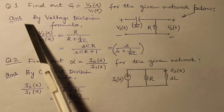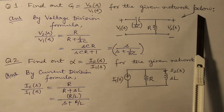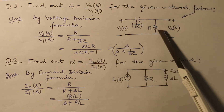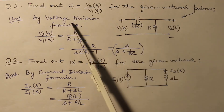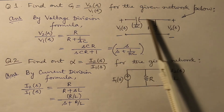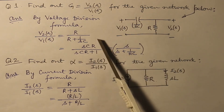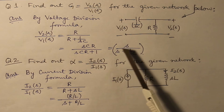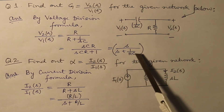Find out the voltage amplification V2 by V1 denoted by G for the given network. In this network, there is a capacitor having impedance 1 over SC and a resistor RO. The output is V2 and the input is V1. Directly by the use of voltage division formula, V2S by V1S is R over R plus 1 over SC, which on solving becomes SCR over SCR plus 1, and this simplifies to S over S plus 1 over RC.